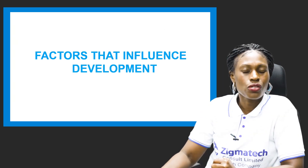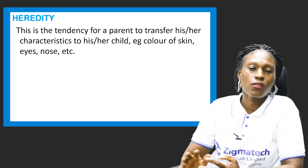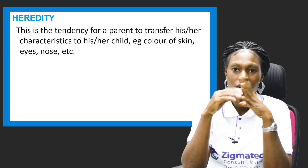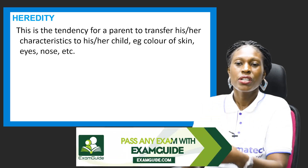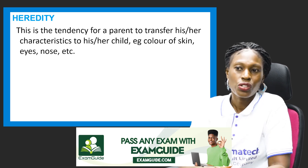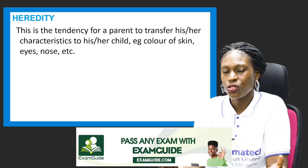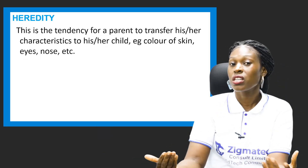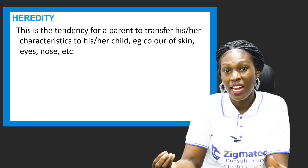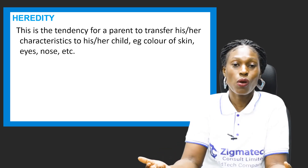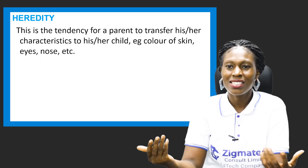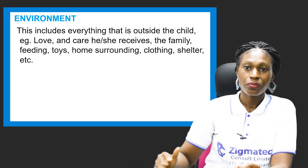Let's look at the factors that influence development. Basically, there are two. The first is hereditary — this is a tendency for a parent to transfer his or her characteristics to his or her child or children: color of skin, eyes, nose, et cetera. Development can be due to hereditary factors. When a child takes some of these characteristics from mom or dad, it adds up to his or her own self as well.